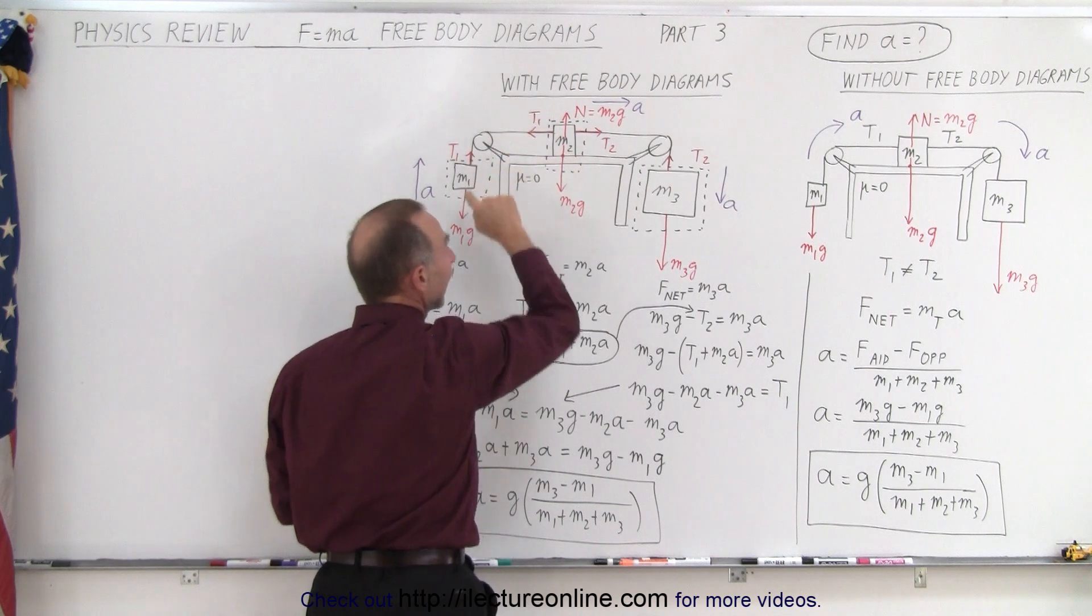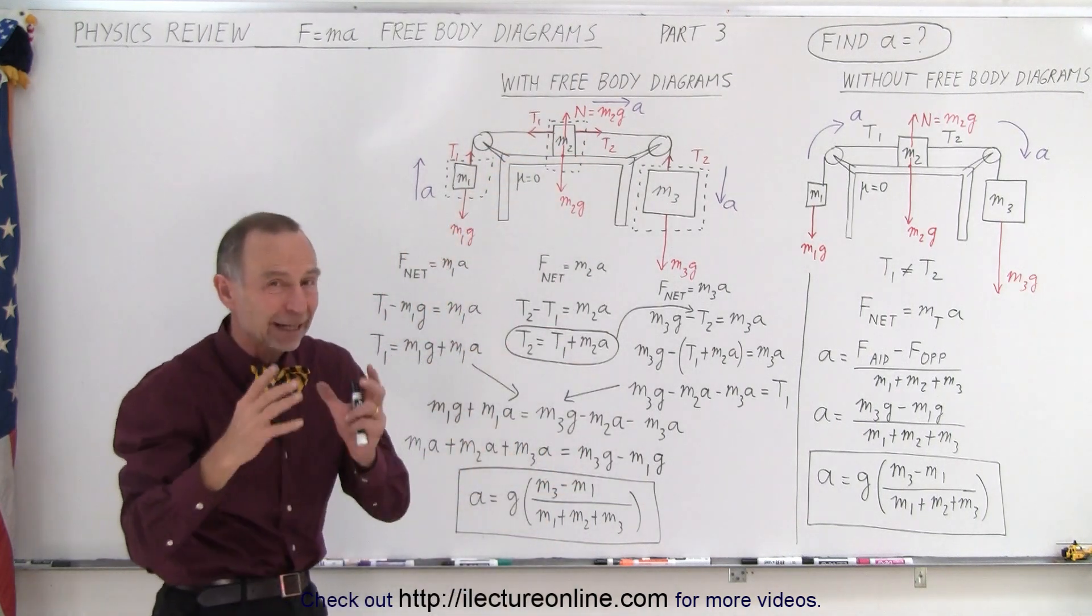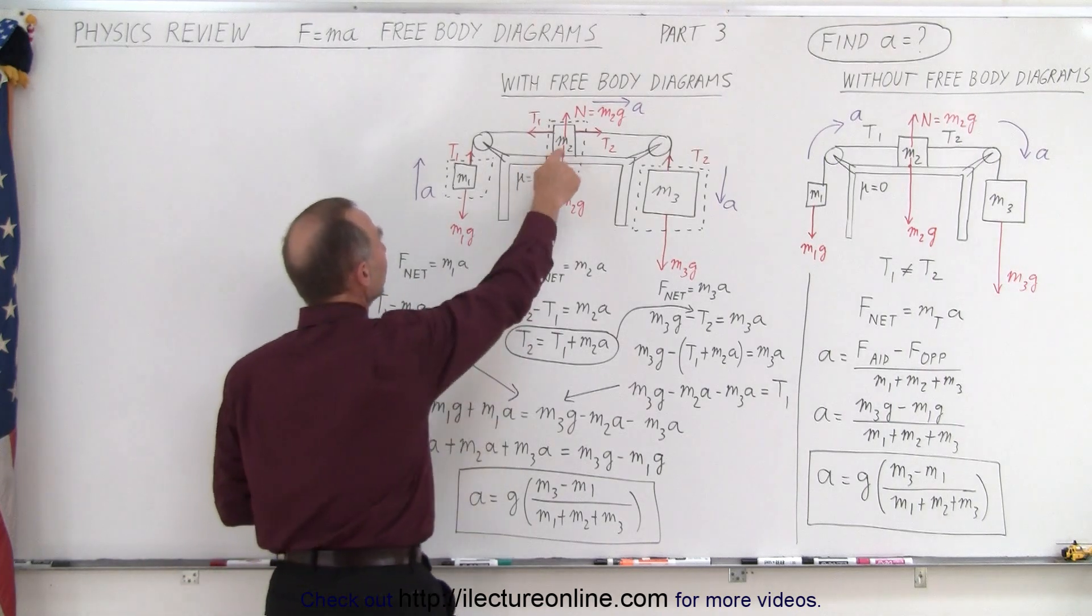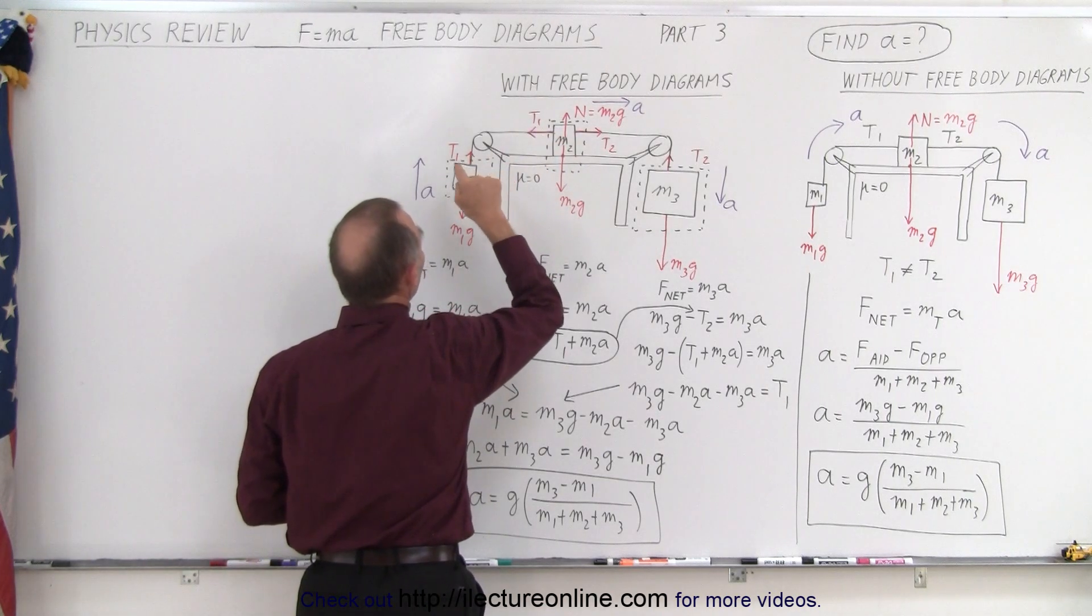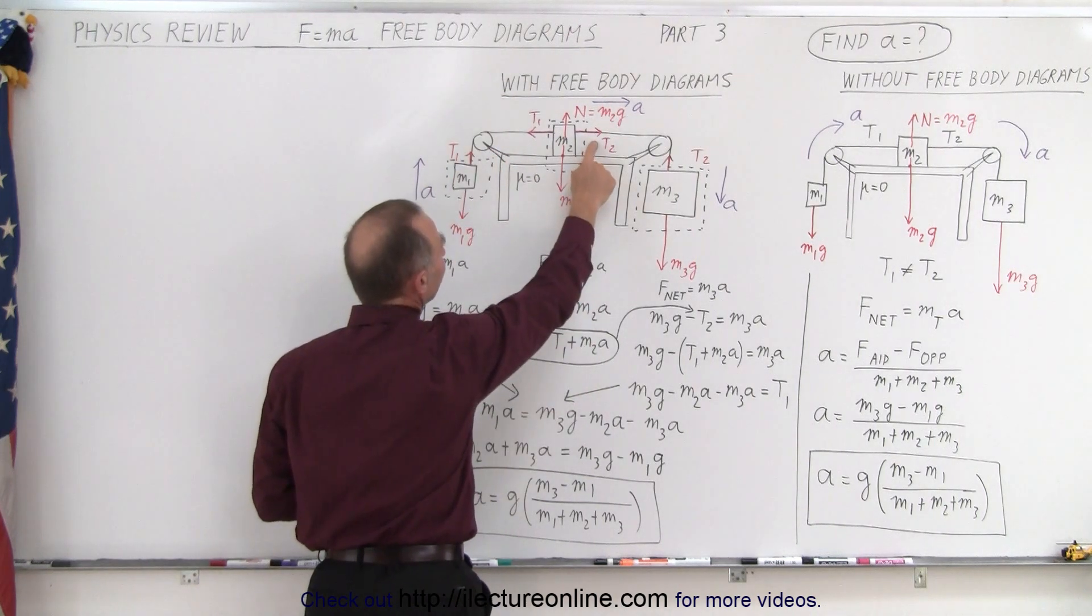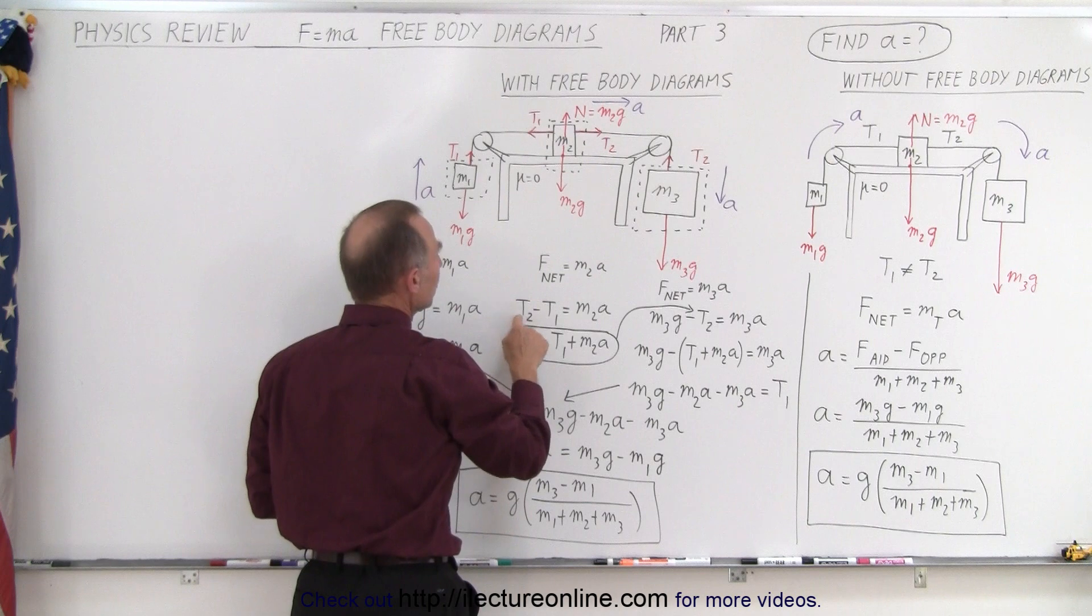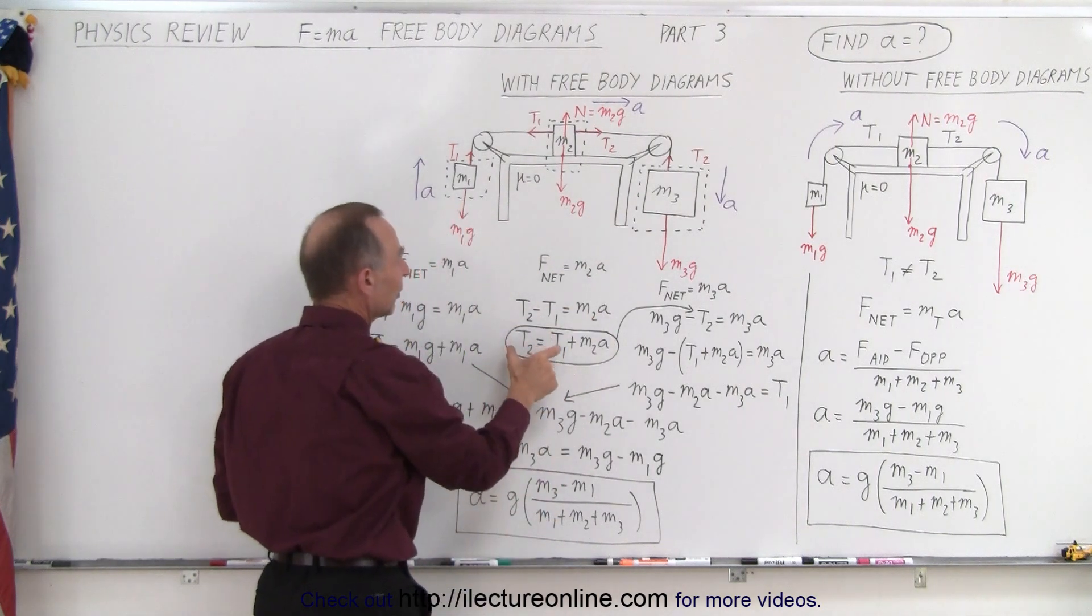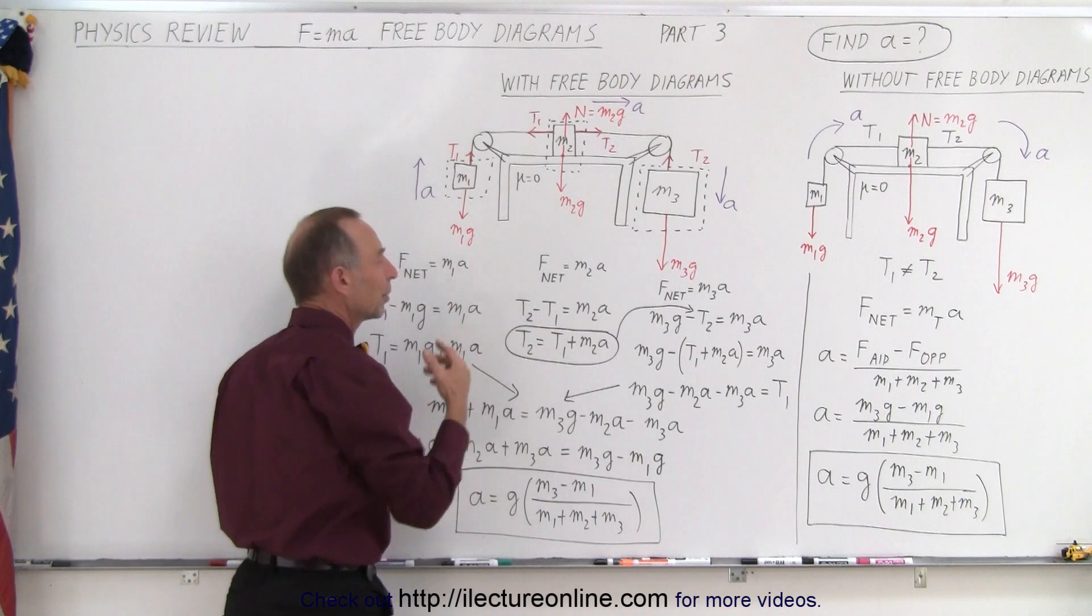Again, it depends on what object it's relative to. Relative to M2, T1 pulls to the left. Relative to M1, T1 pulls upward. So here we have the aiding force minus the opposing force, T2 minus T1, equals the mass M2 times acceleration. And so here we have T2 equals T1 plus M2A.